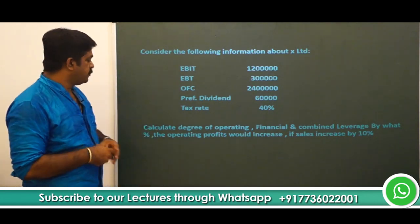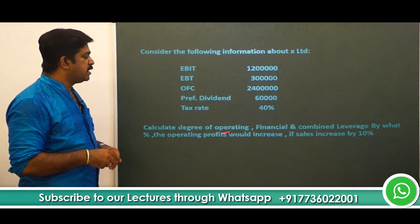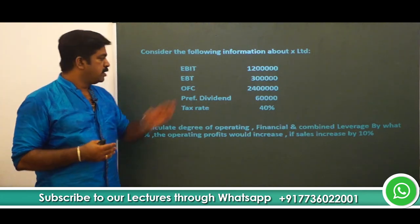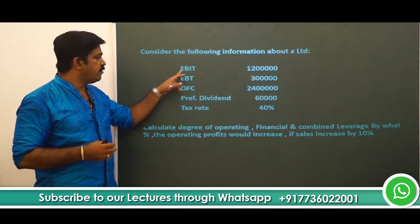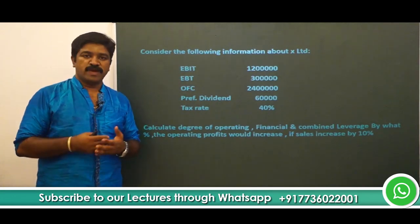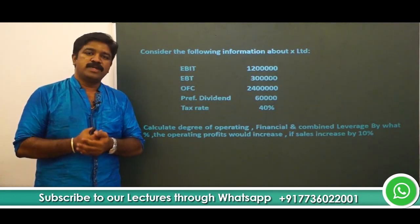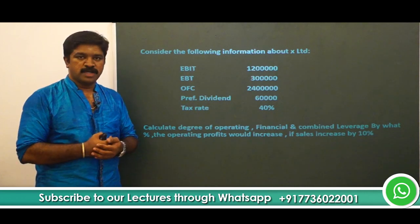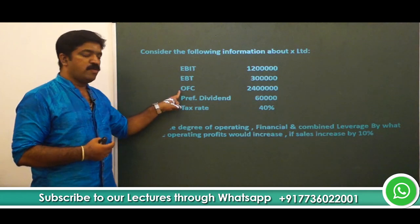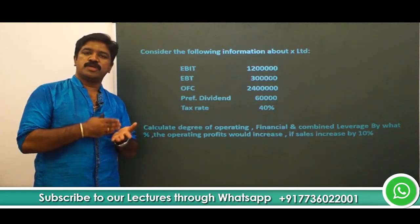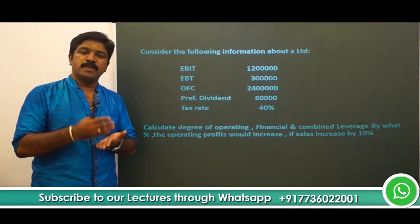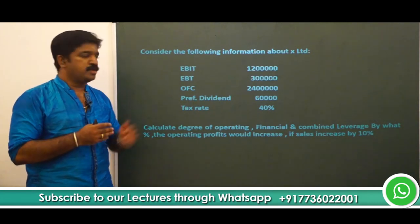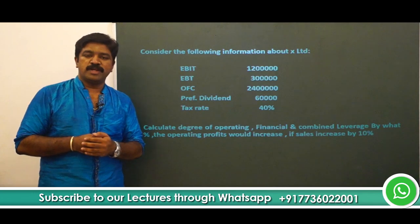You have some information. If you want to calculate the operating leverage, what do you need? Contribution and EBIT. In the available information, you have EBIT, so you have to find out contribution. EBIT is derived from contribution by deducting Operating Fixed Cost. Since you have EBIT and Operating Fixed Cost, Contribution minus Operating Fixed Cost equals EBIT, meaning EBIT plus Operating Fixed Cost equals contribution. So contribution divided by EBIT gives you the Operating Leverage.